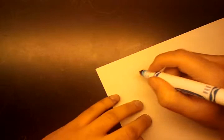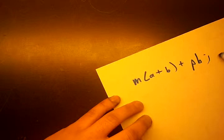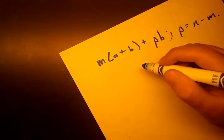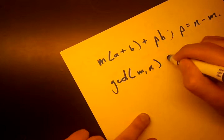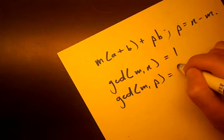Again, let's write down our formula. We have M A plus B plus P B, P equals N minus M. So, we're going to assume now that GCD MN equals 1. That also implies that GCD of M and P equals 1. Why?